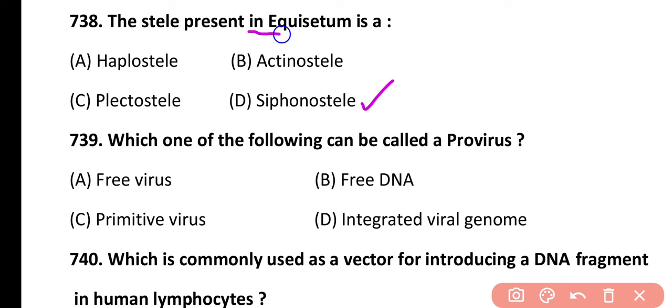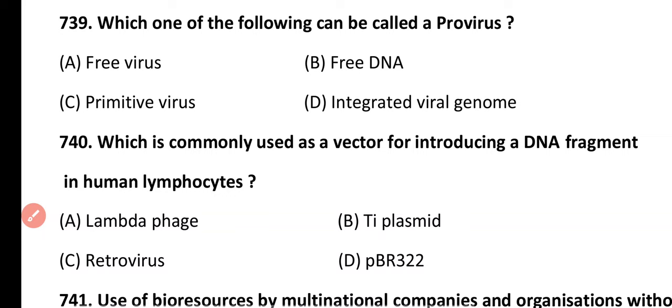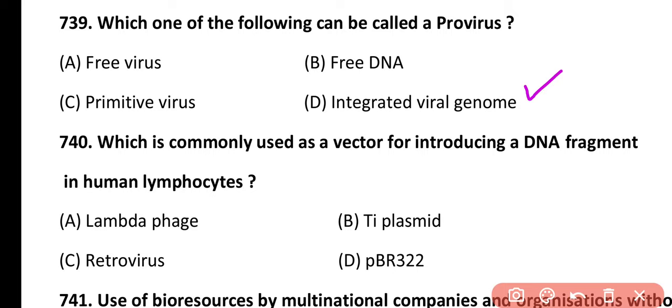Question 739. Which one of the following can be called a provirus? Free virus, free viral DNA, primitive virus, or integrated viral genome. Correct answer is option D. An integrated viral genome — where viral DNA is incorporated into the host bacterial chromosome — is known as a prophage, which is also called a provirus.